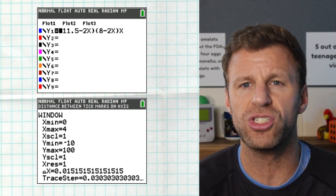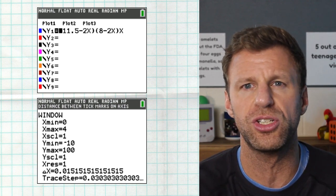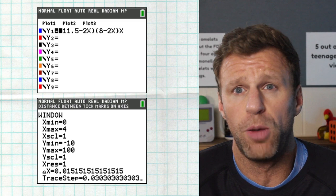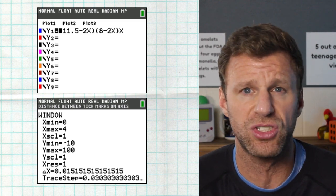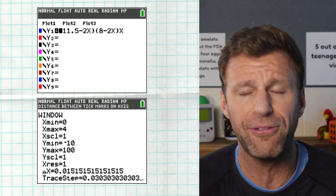Then we're going to have to adjust our window. Always be careful adjusting your window. So I first think about that domain that we just talked about, the x min is 0, the x max is 4. There's no reason to look before or after 4.